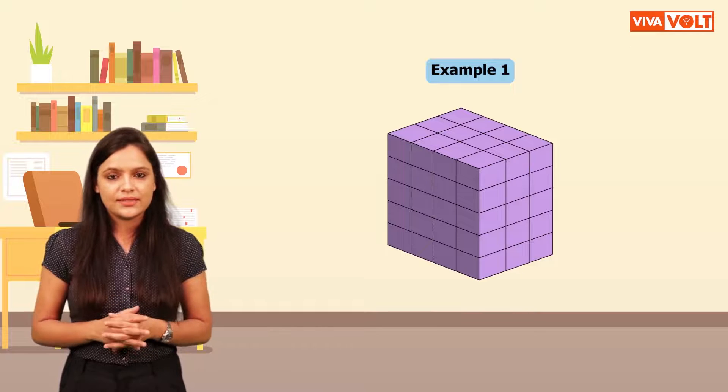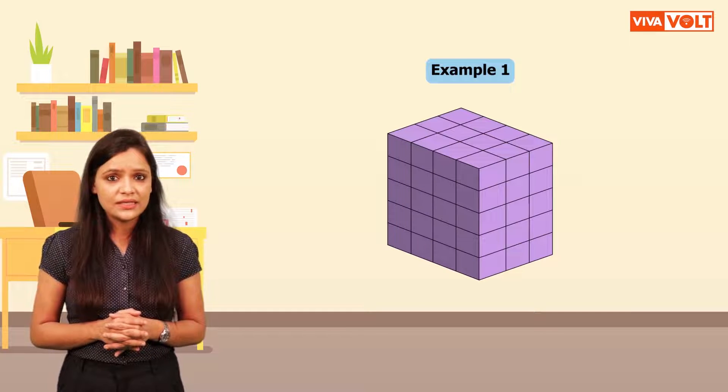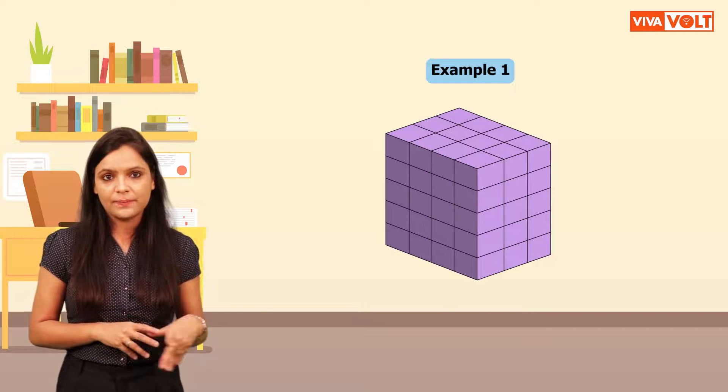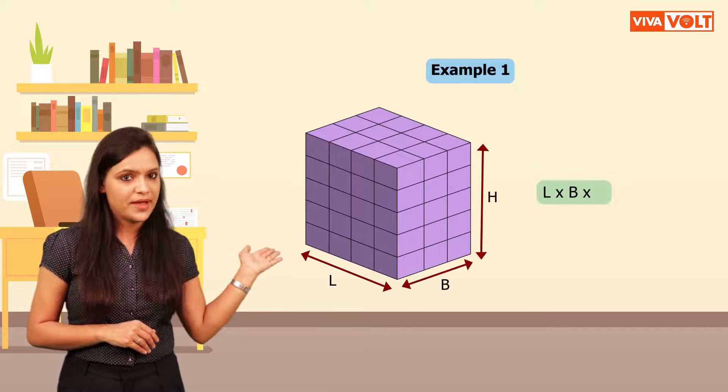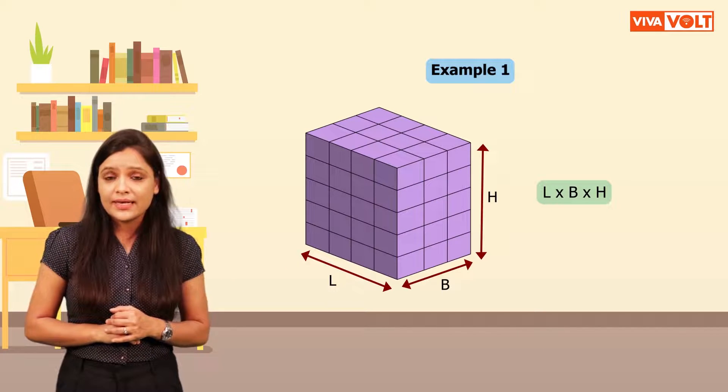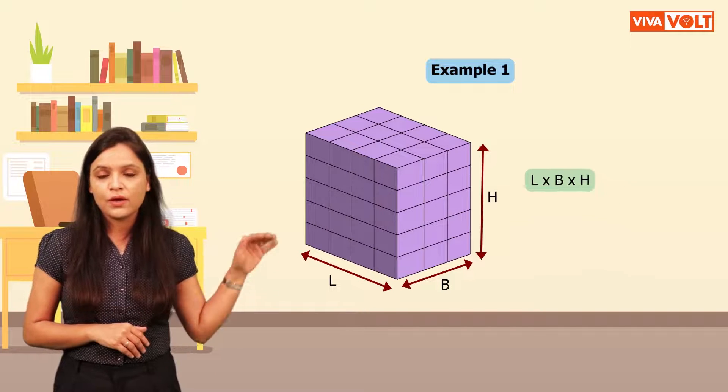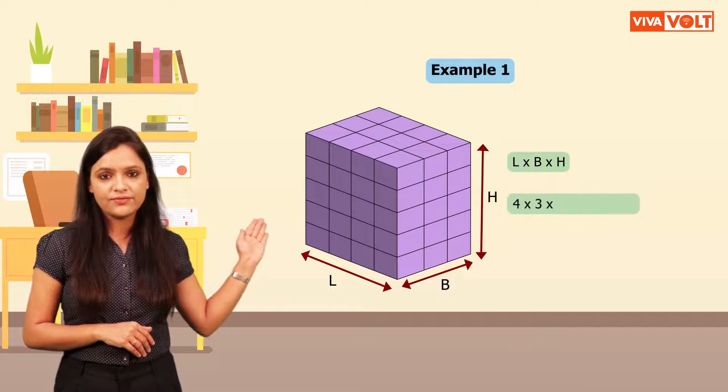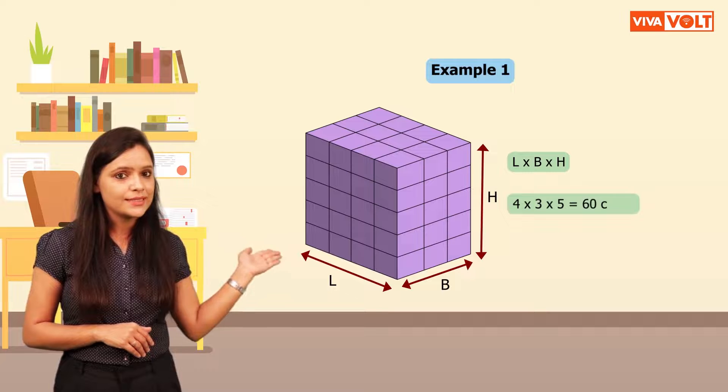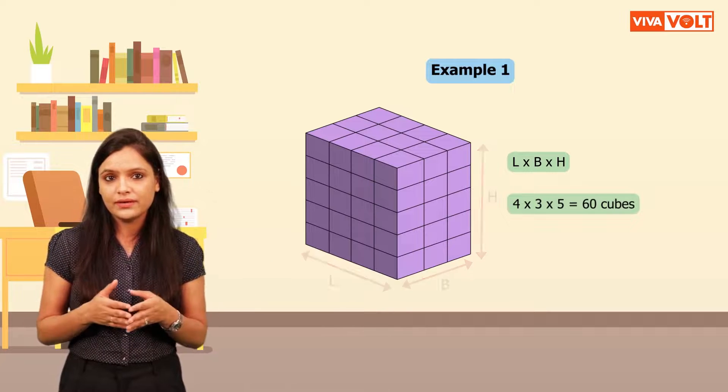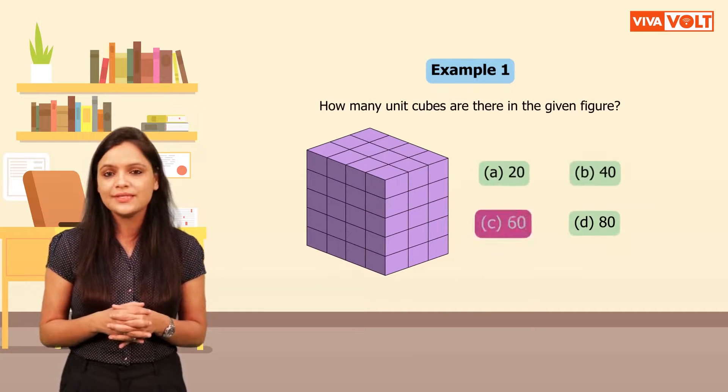Children, in such cases where the number of cubes in each surface of the figure is different, we apply this formula: L x B x H. Let's count the cubes and place values in the formula. 4 x 3 x 5 is equal to 60 cubes. So, there are 60 cubes in this figure and the correct answer is option C.